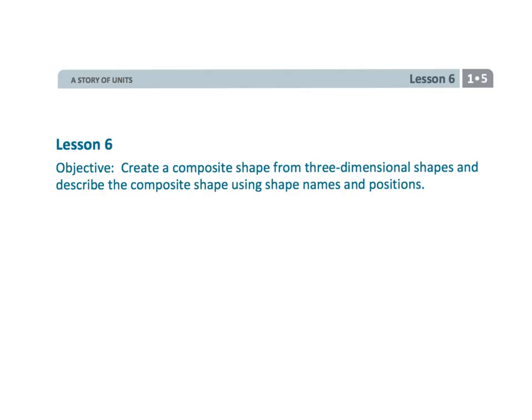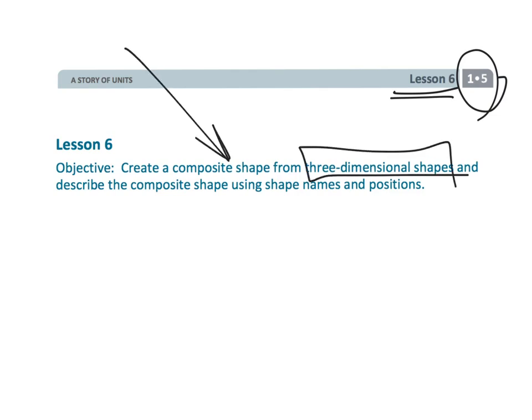And that wraps up a quick one. That's first grade, module five, lesson six. It's quick, but it's fun. We're playing with three-dimensional shapes to build really cool figures. And then we're going to be using math vocabulary to describe it.